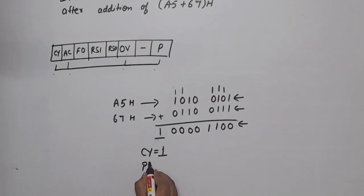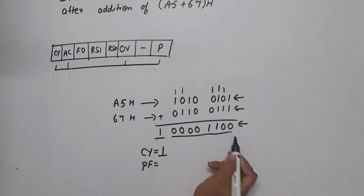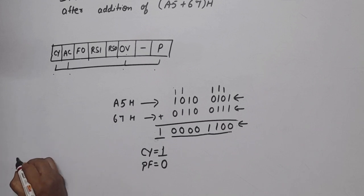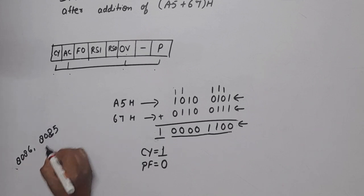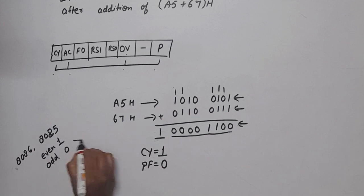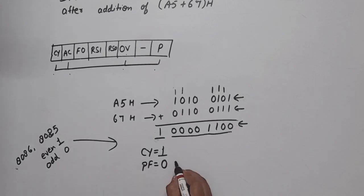For parity flag, you have to count the number of 1s. Please remember, count the number of 1s in the 8-bit result. Here, 1, 2—even. That's why parity flag's value will be 0. If you're confused, please remember: in case of 8086, even is 1 and odd is 0, but in case of 8051 it's reversed: 0 for even and 1 for odd. So here, even (2 ones), that's why 0.